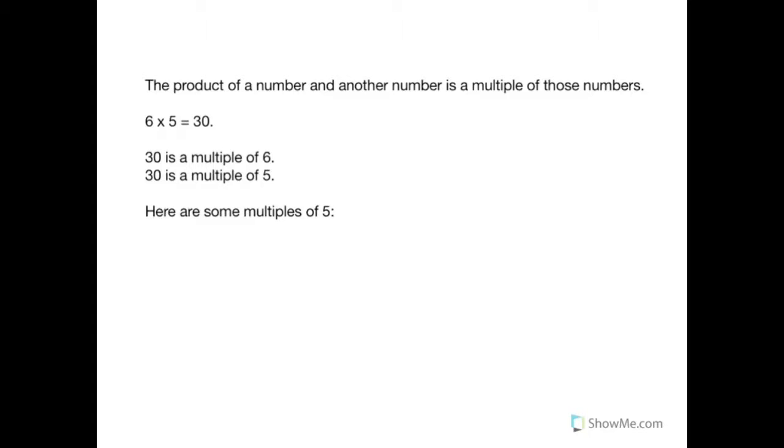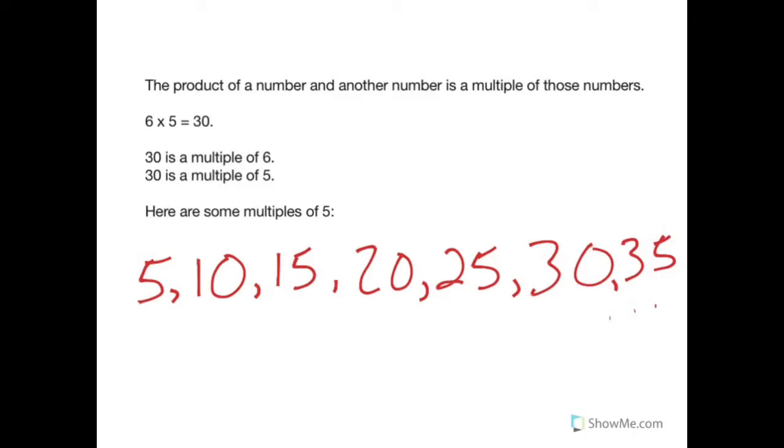Thirty is also a multiple of five. Let's look at the multiples of five. Five times one is five. Five times two is ten. Five times three is fifteen. Five times four is twenty. Five times five is twenty-five. Five times six is thirty. Five times seven is thirty-five. And we could go on and on. All of these numbers are then multiples of five.